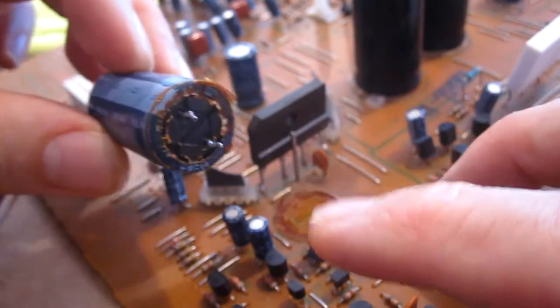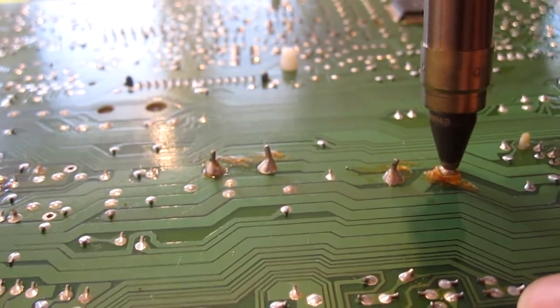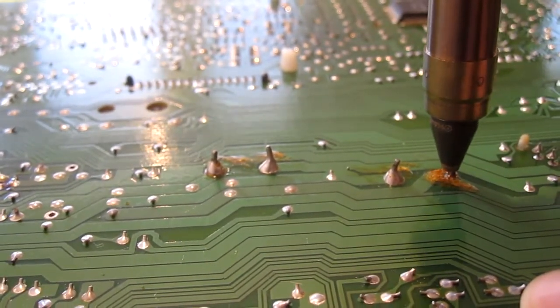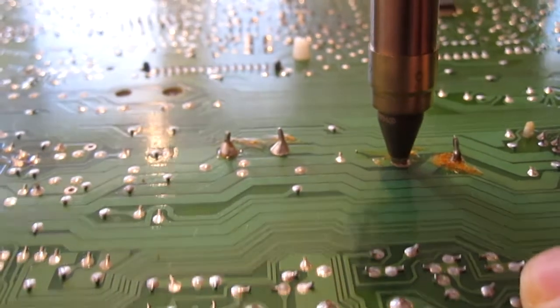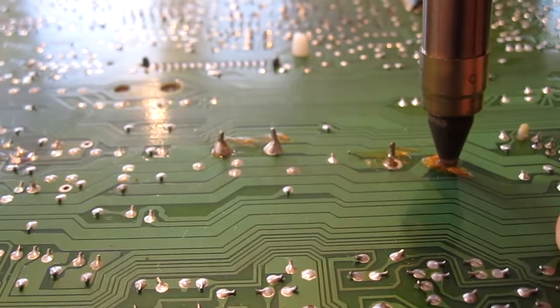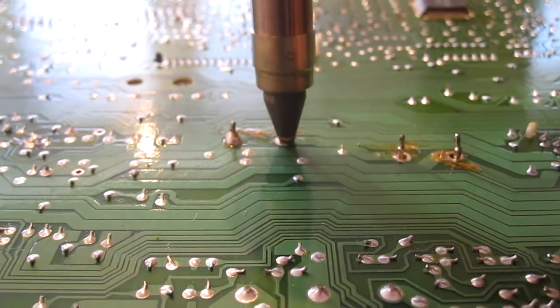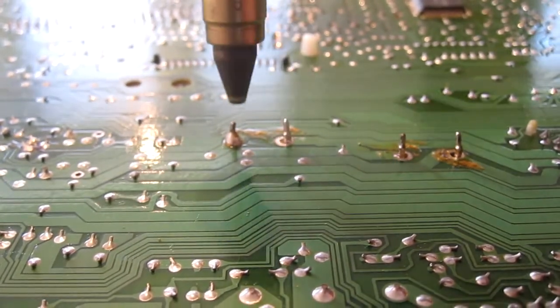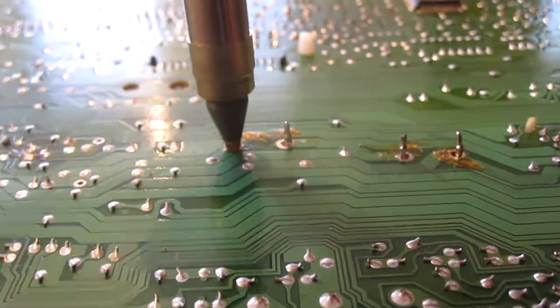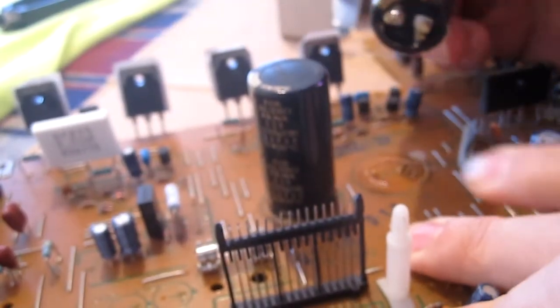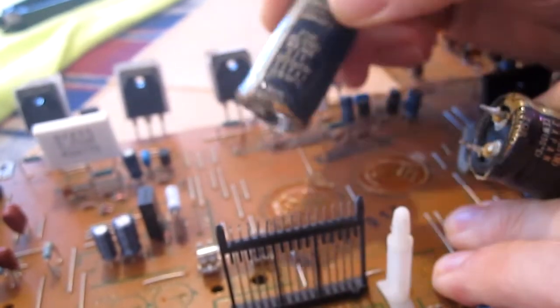This one was leaking. Look at all that. These are the two big black capacitors. I don't know, maybe that stuff is glue where they glued them to the board. Yeah, I think that's glue.